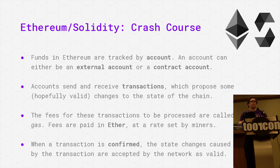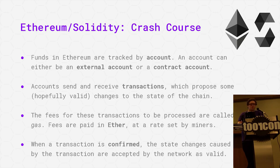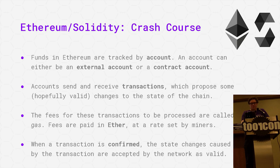The other is a contract account, which essentially has associated code and data. That code manages how fund transfers work and can record things to the chain. Accounts send and receive transactions, which are essentially proposed changes to the state of the chain. If they're valid, a miner will eventually confirm them to the chain for a fee, and at that point they're accepted as valid and will stay around essentially forever.